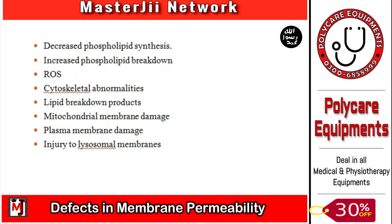Plasma membrane damage can be caused by microbes or toxins causing membrane damage, or it can be caused by complement components which can break down the membrane. Physical and chemical injury can also cause membrane permeability changes and membrane damage.